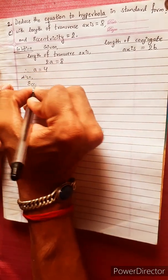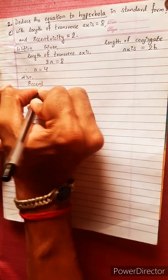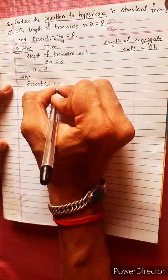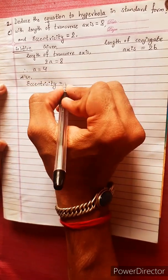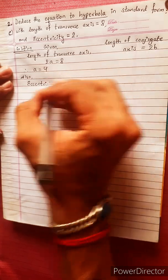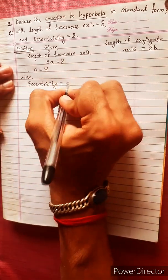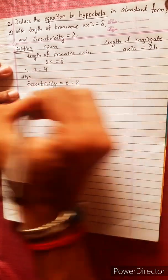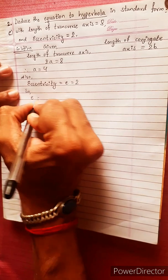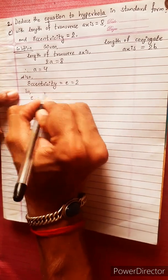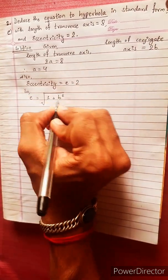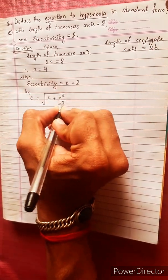Eccentricity. Eccentricity formula. Transverse axis. Eccentricity e equals to 2. This formula: under root 1 plus b squared divided by a squared.